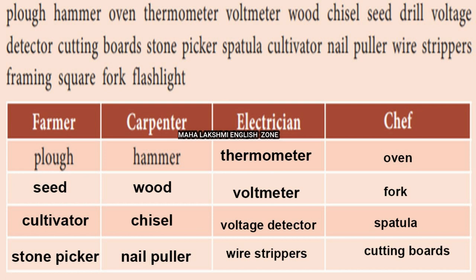Words related to different professions: for farmer — plough is the loosening of soil, seed cultivator is for ploughing and growing plants, and stone picker removes stones. For carpenter — hammer, wood, chisel, and nail puller. For electrician — thermometer, altimeter, fault detector, and wire strippers. For chef — oven, fork, spatula, and cutting boards; spatula is the tool used to stir and turn food while cooking.